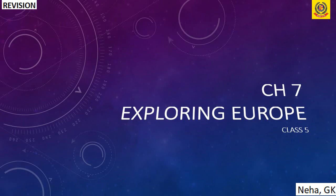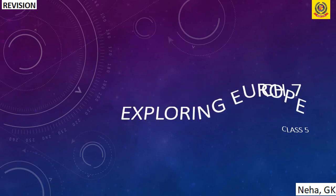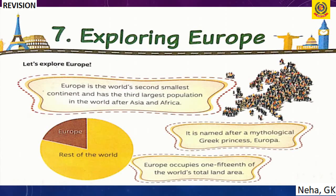Chapter 7: Exploring Europe. Europe is the world's second smallest continent and has the third largest population after Asia and Africa. It is named after the mythological Greek princess Europa and occupies one-fifteenth of the world's total land area.